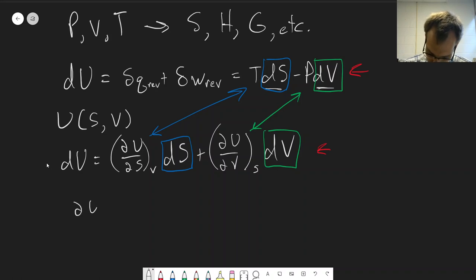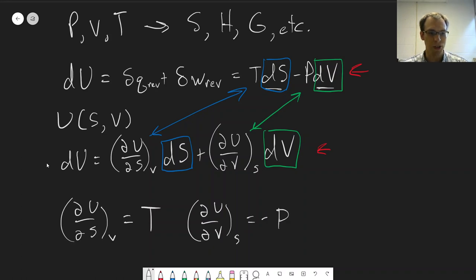(∂U/∂S)_V is equal to T, meaning the change in internal energy with respect to entropy at constant volume is equal to temperature. That one's not terribly useful because we can't measure entropy directly. And we can also say that (∂U/∂V)_S is equal to the negative of the pressure.